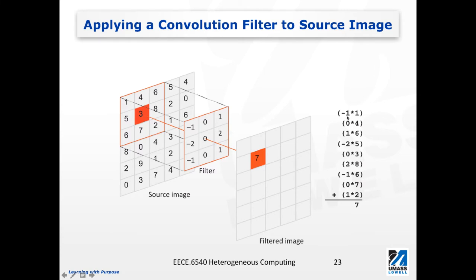So that's what we see here — this minus 1 times 1 takes this pixel with the corresponding pixel in the filter, and 0 times 4 takes this value with this pixel. We have all nine pairs of multiplications, and then we sum the multiplication results together, eventually getting the value 7. So 7 will be the final value at this location in the filtered image. We will have to apply such filtering operations for every single pixel. There are certain pixel locations we have to be very careful about, especially those close to the boundary.